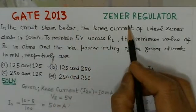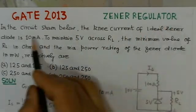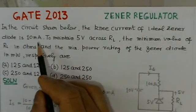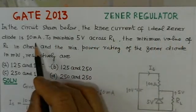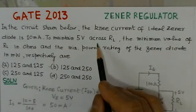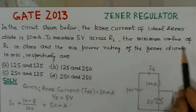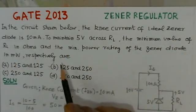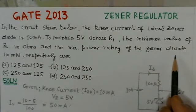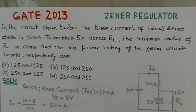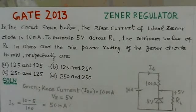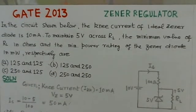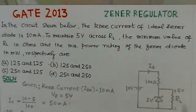First I will read out the problem here. GATE 2013 Zener regulators. In the circuit shown below, the knee current of the ideal Zener diode is 10 mA. To maintain 5 volts across RL, the minimum value of RL in ohms and the minimum power rating of the Zener diode in milliwatts, respectively, are. There are four options given and we have to find the right option.